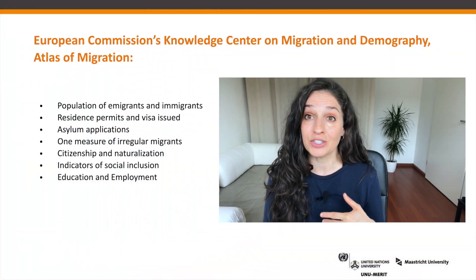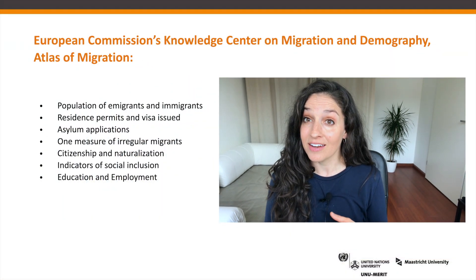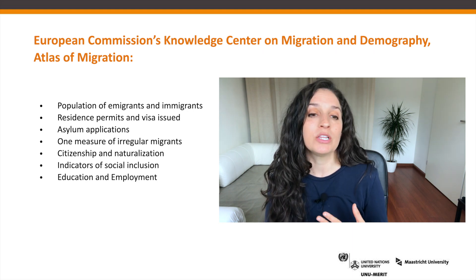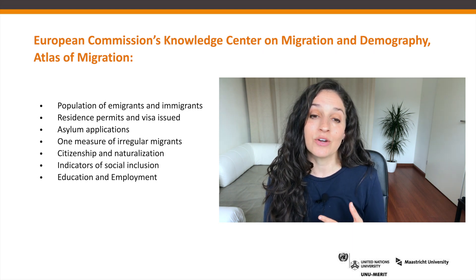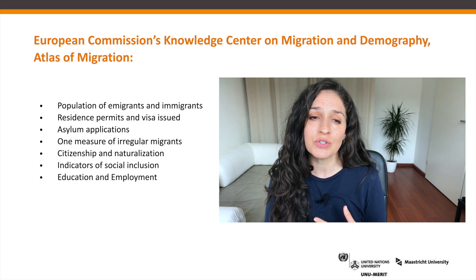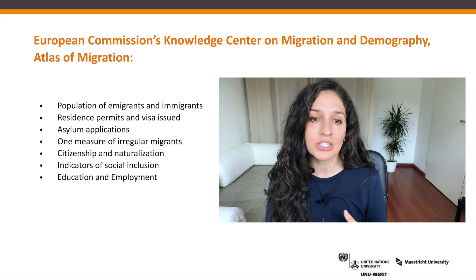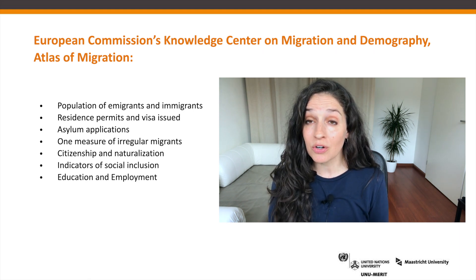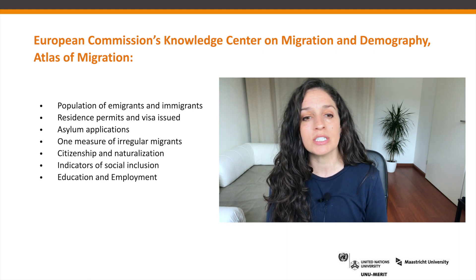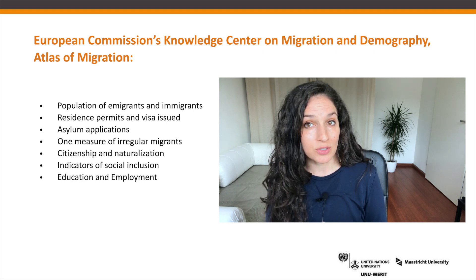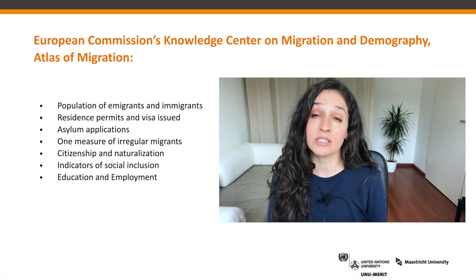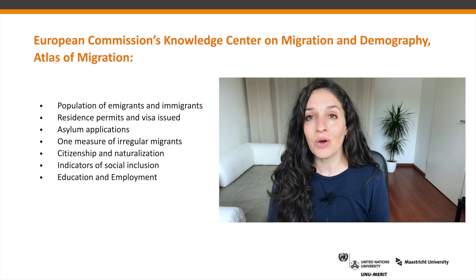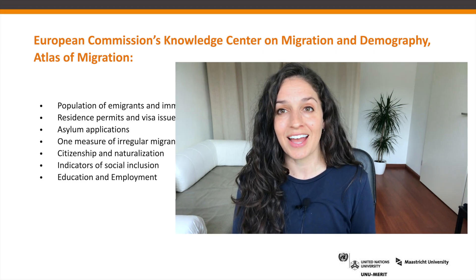What are we going to be looking at today? We are going to be looking at the population of immigrants in Germany. We'll be looking at residence permits and visas issued, asylum applications, one specific measure of irregular migration, citizenship and naturalization in Germany, as well as some indicators of social inclusion, and we'll also look at education and employment.